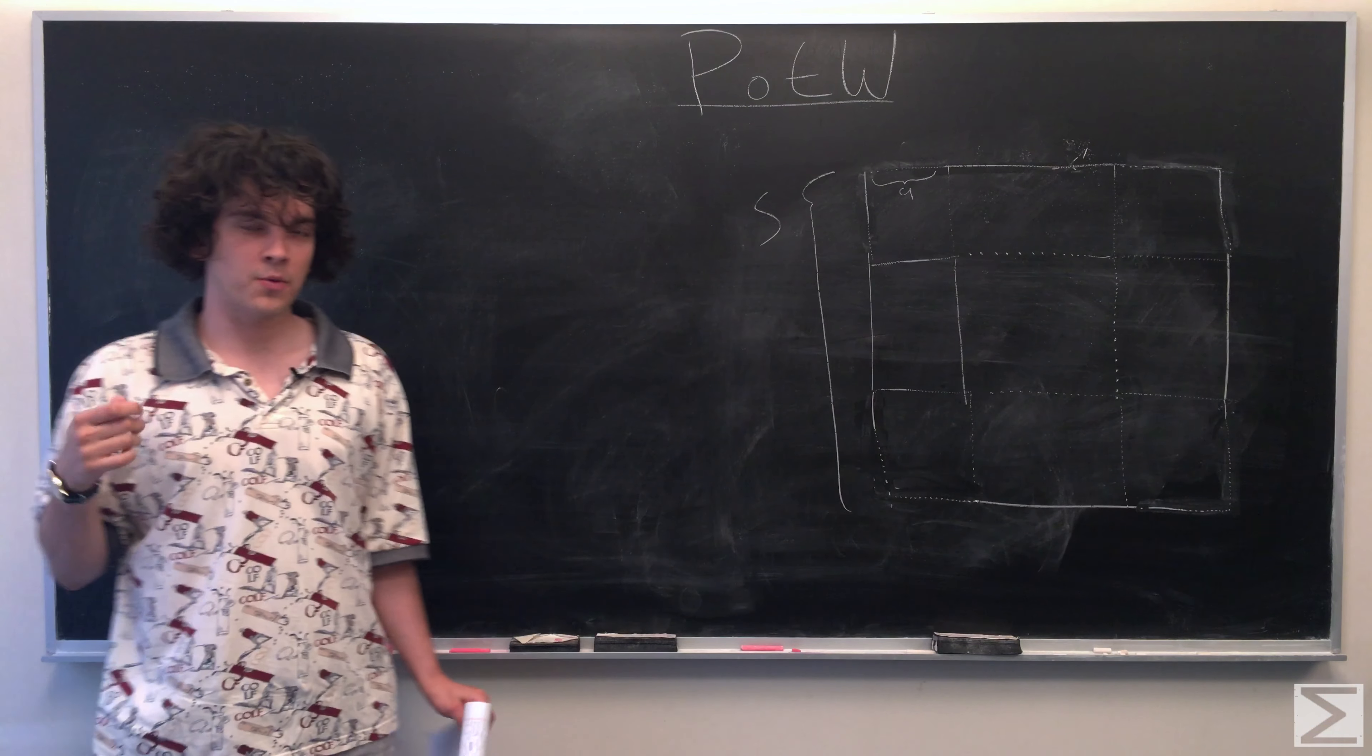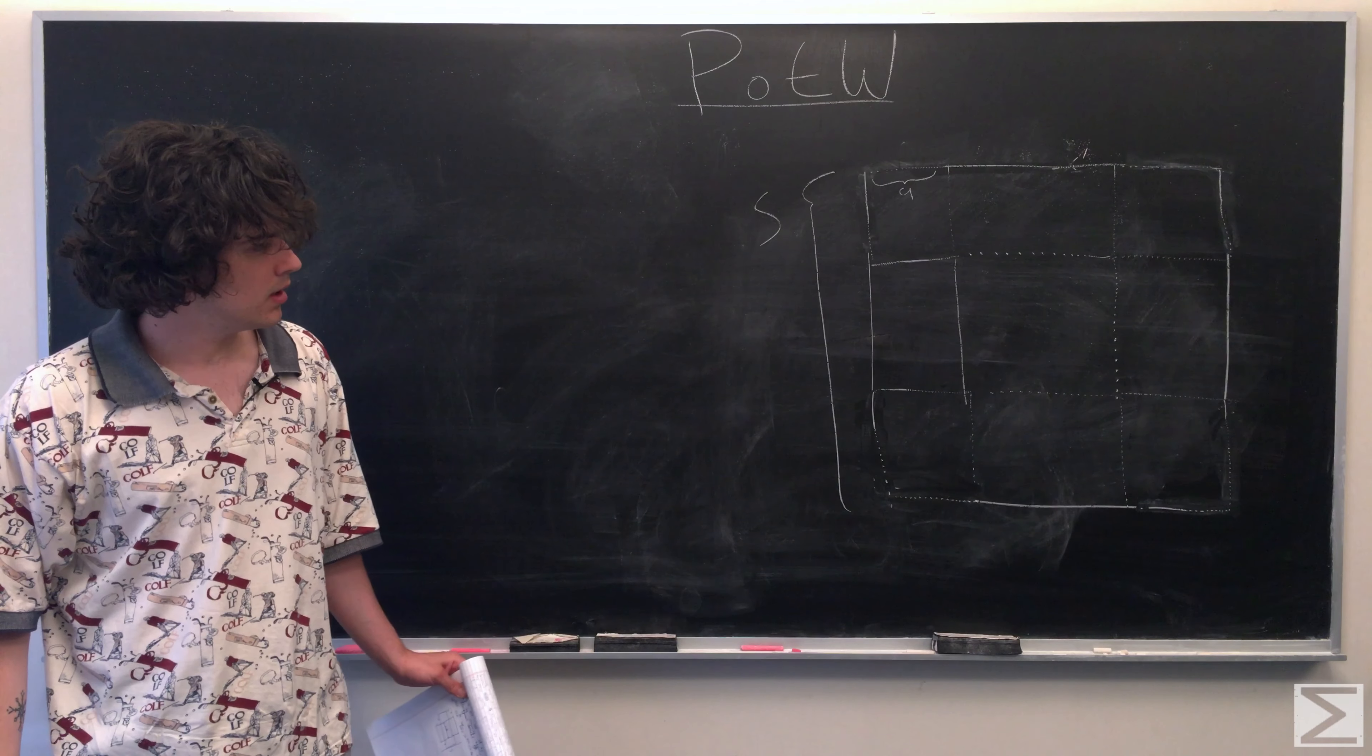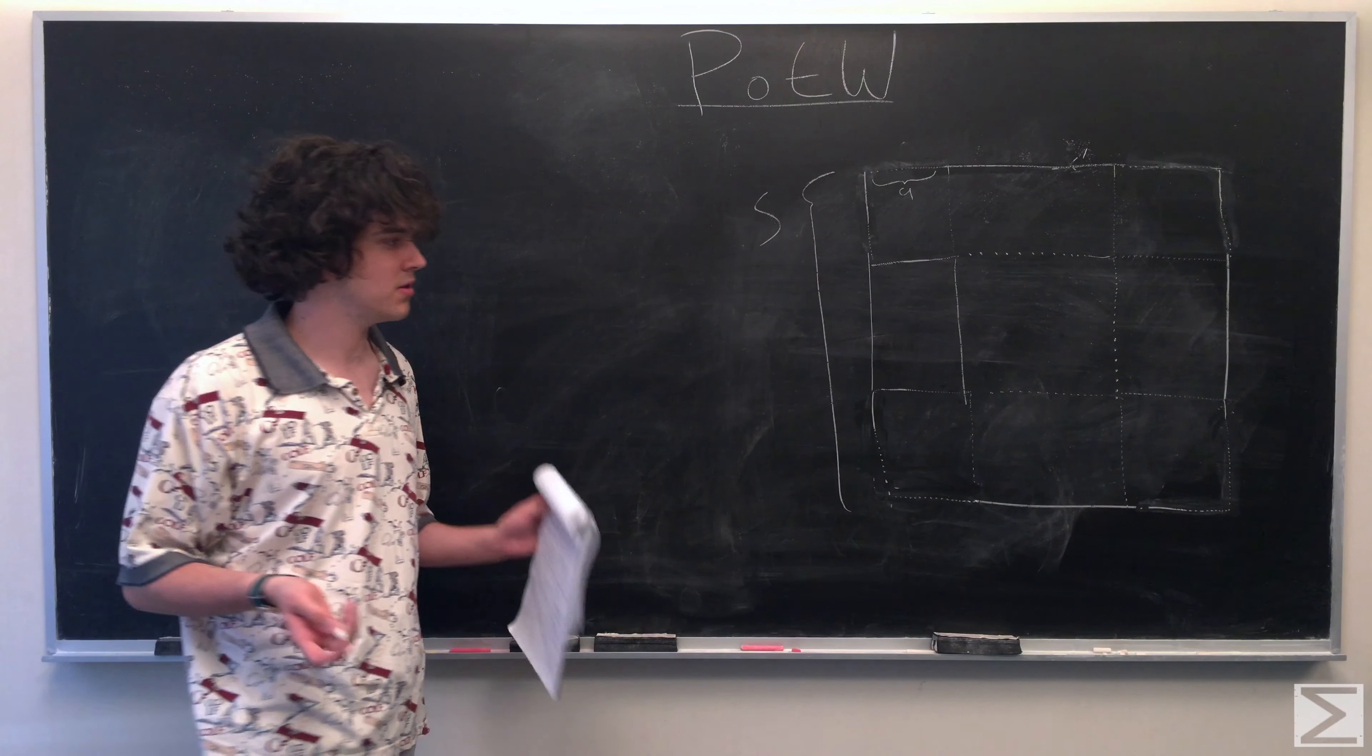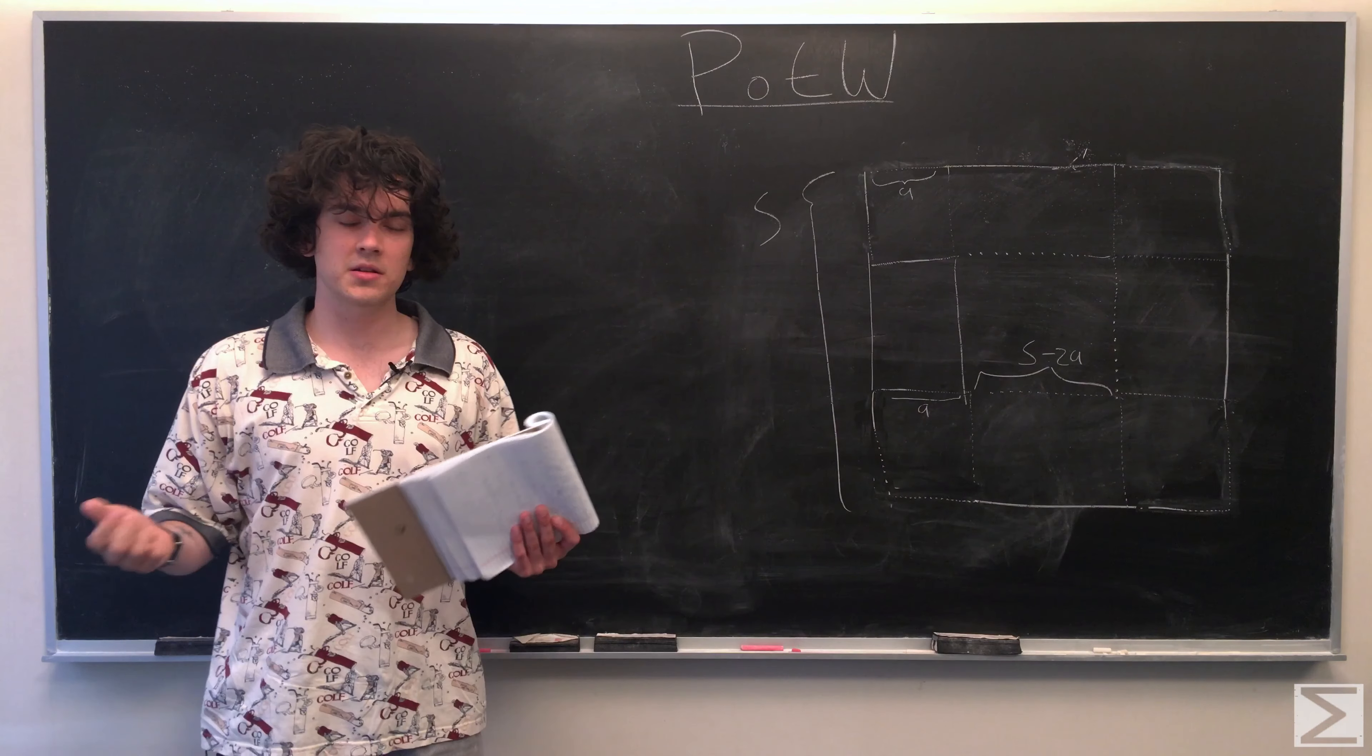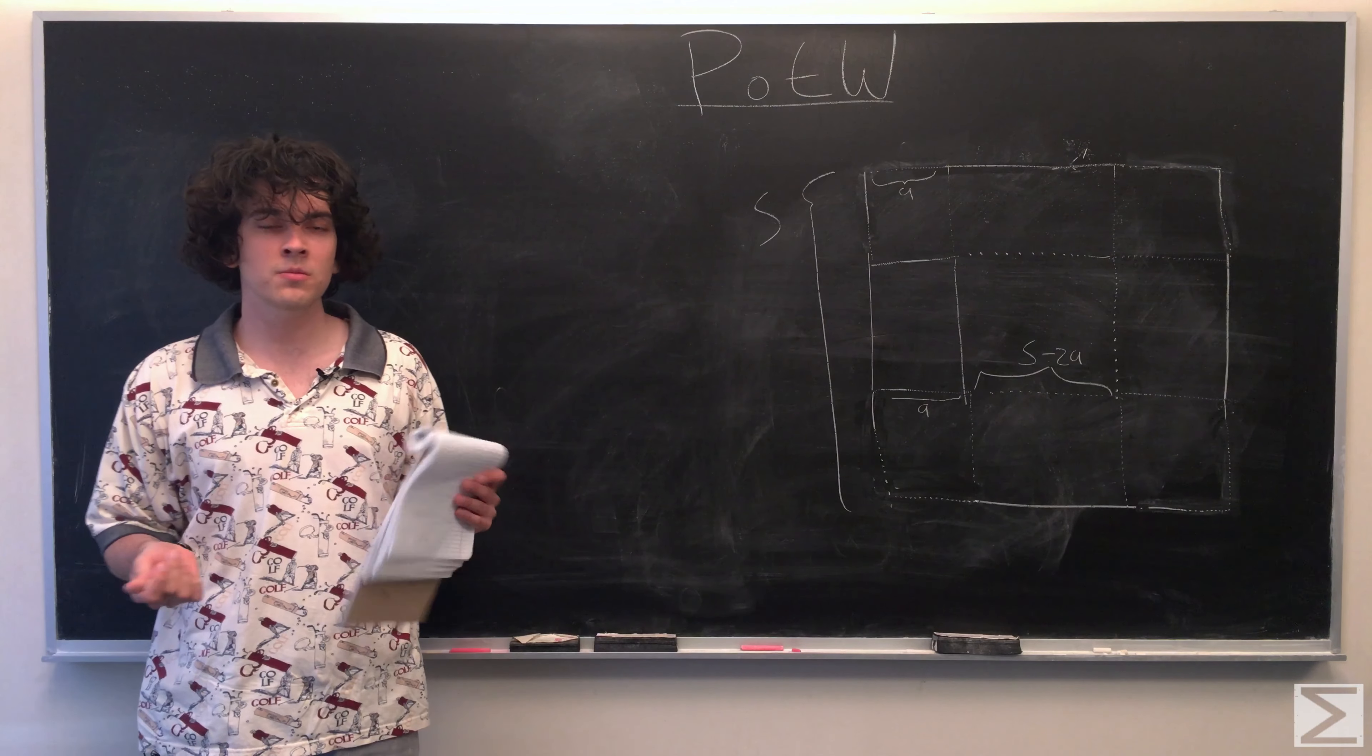And we're looking for when the volume of this box is maximized. So first useful thing to know would be the volume of the box. So we need to know the length, the width, and the height. Multiply those three together, we get the volume.